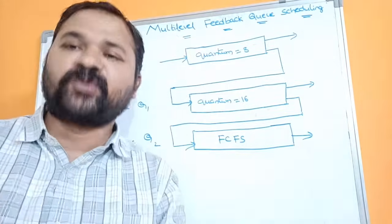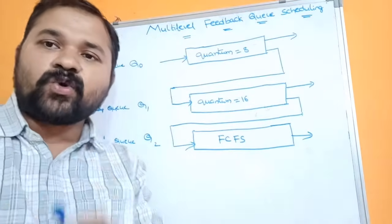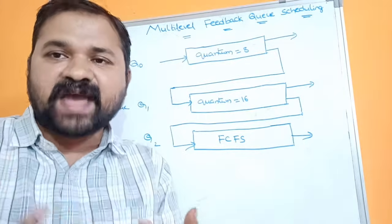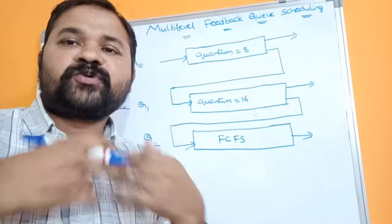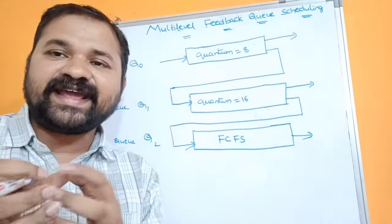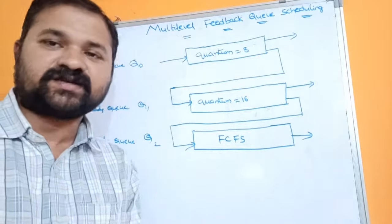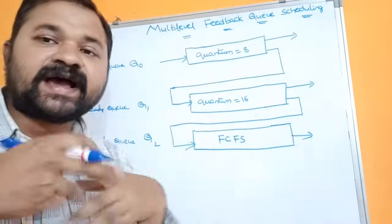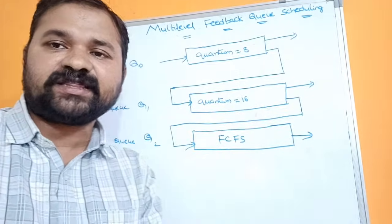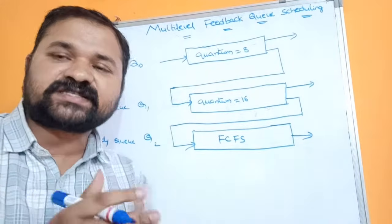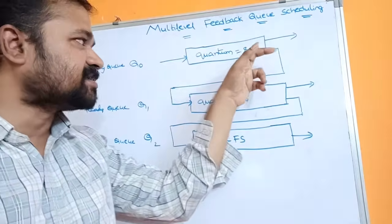We use a ready queue for storing processes. The reason we use Round Robin for Q0 and Q1 is that Round Robin produces output in a faster manner — it produces a response in less time. Whereas FCFS takes more time to produce a response. The last ready queue holds low priority processes, whereas the top queues hold high priority processes. That's why for high priority processes we use Round Robin scheduling.